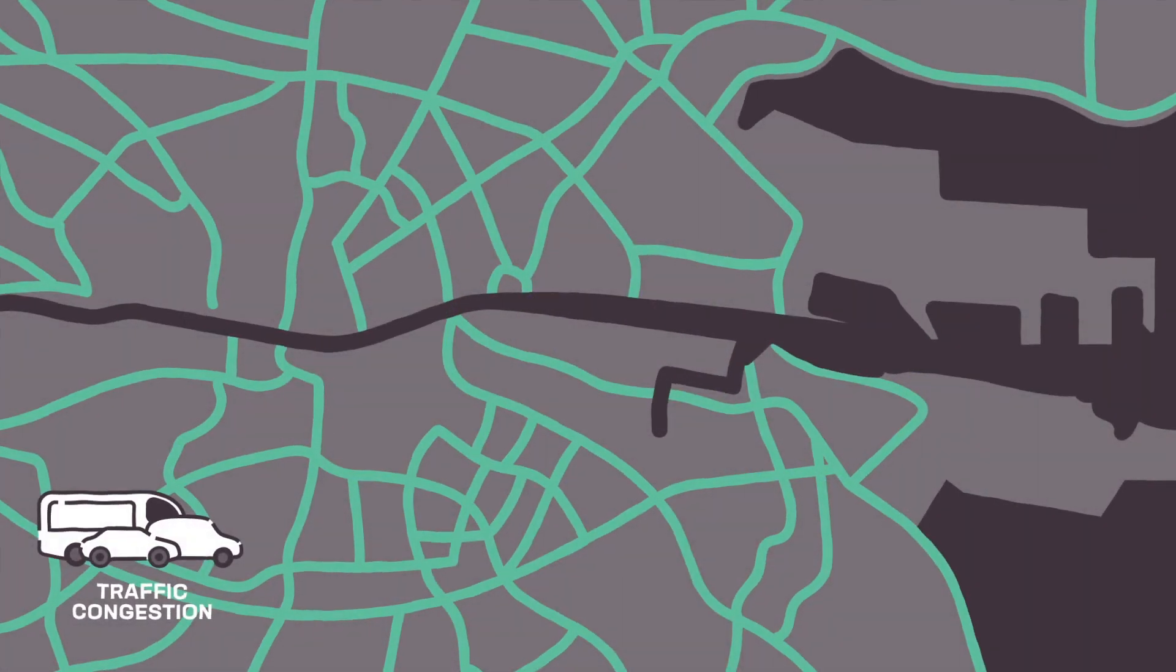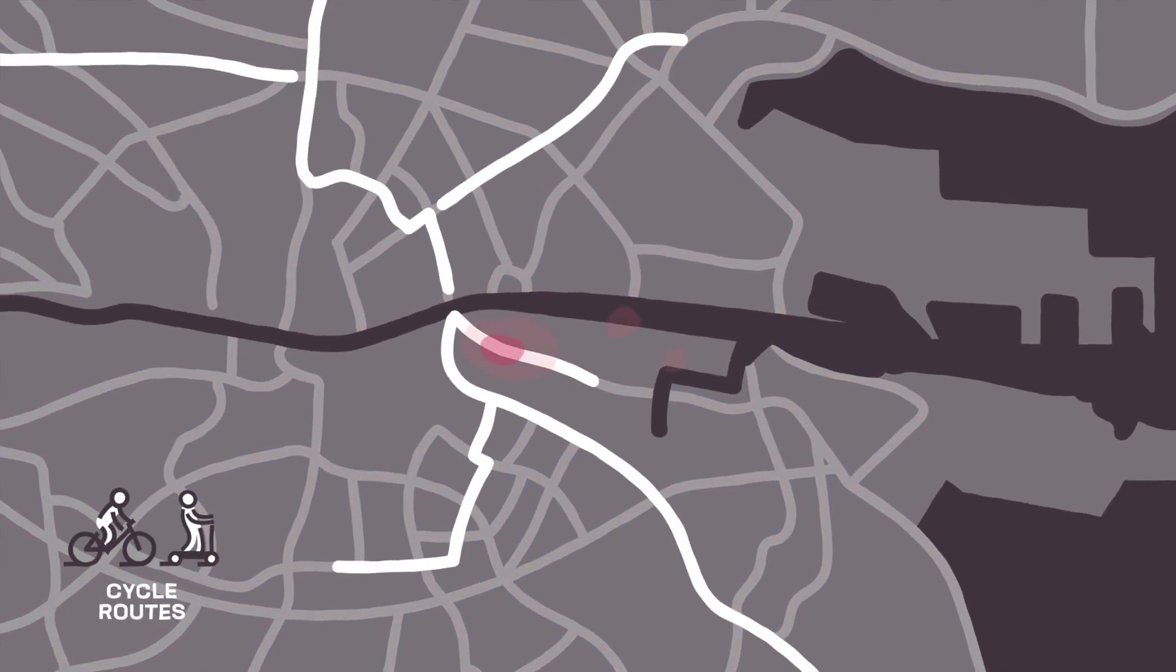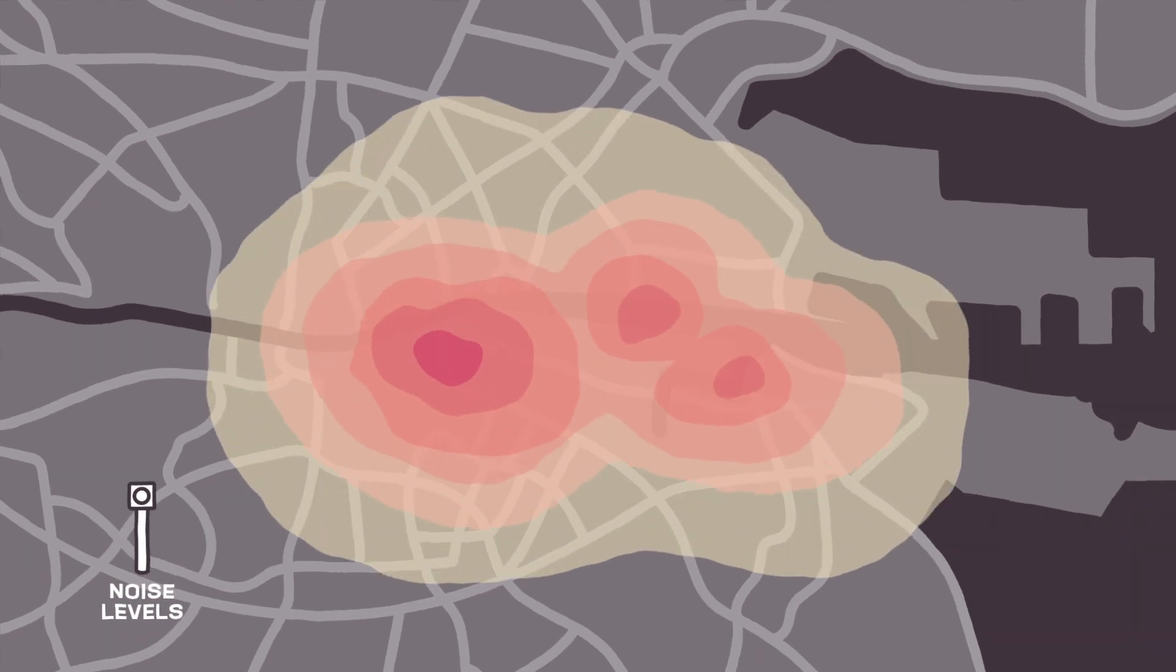This data we all generate can include information on real-time traffic congestion, the use of cycle routes, the amount of energy or waste we use, or even how noisy it is.